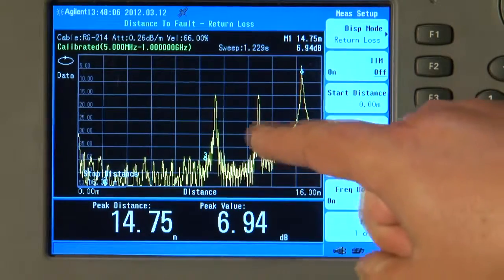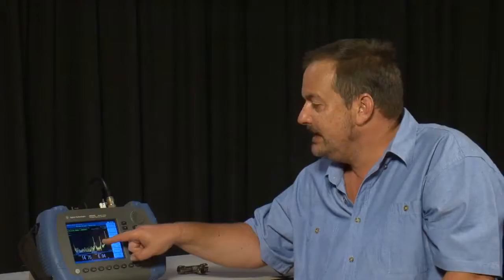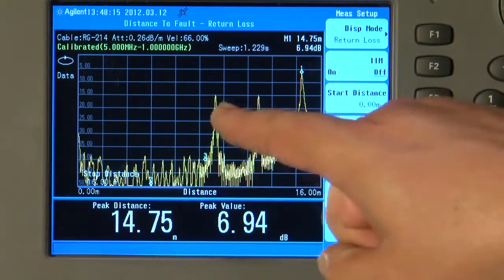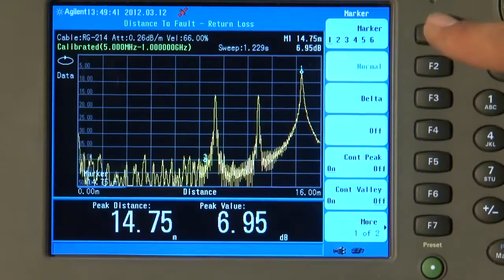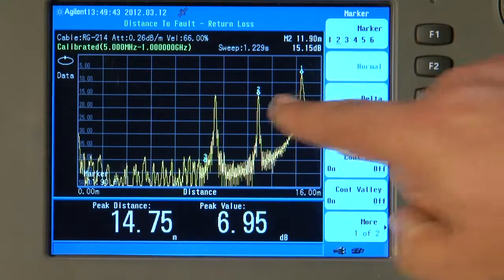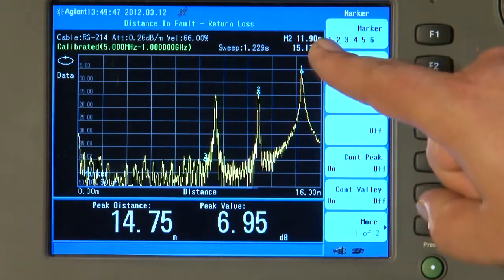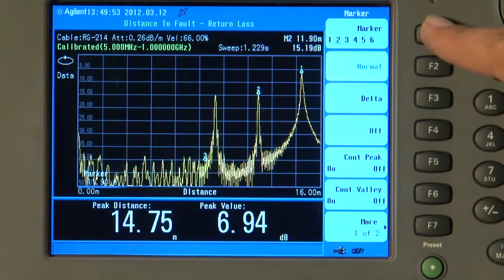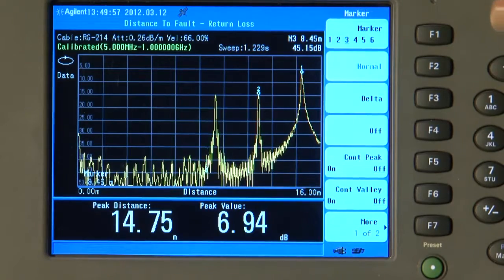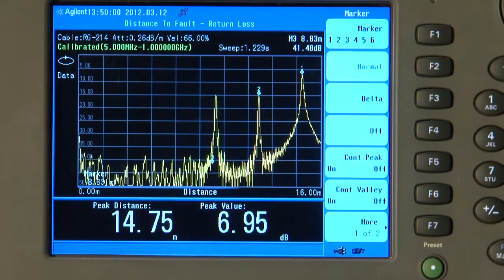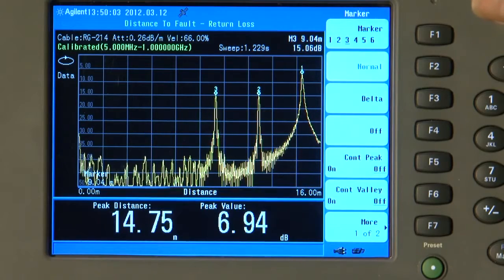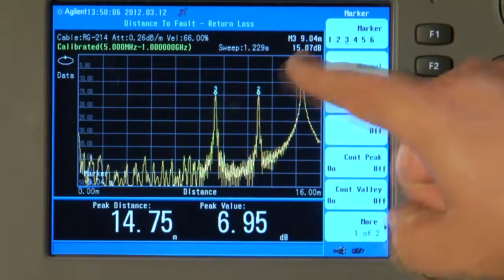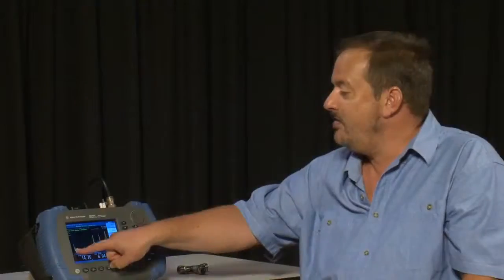But here you can see two very clear faults in the cable. Now, I know those faults are there because I made up this cable from, in fact, three lengths of cable and used some poor quality adapters to simulate some cable faults. So let us press Marker and turn on Marker 2. And you can see that discontinuity there is at 11.9 meters and is a fairly poor return loss of about 15 dB. And I will turn on Marker 3. And let us just line that up with the other discontinuity there. That cable break there, or cable fault, is at 9.04 meters from this point here.